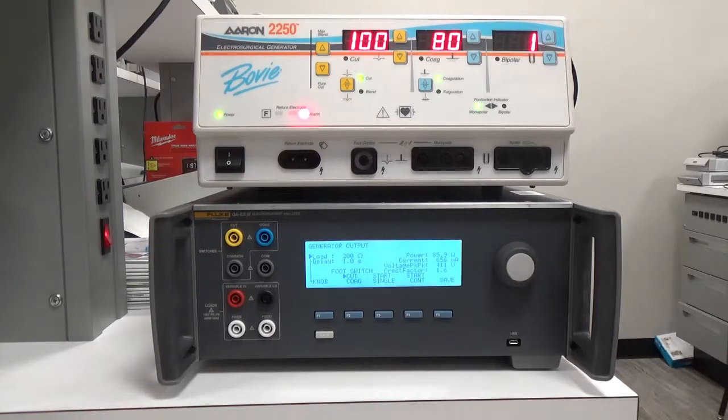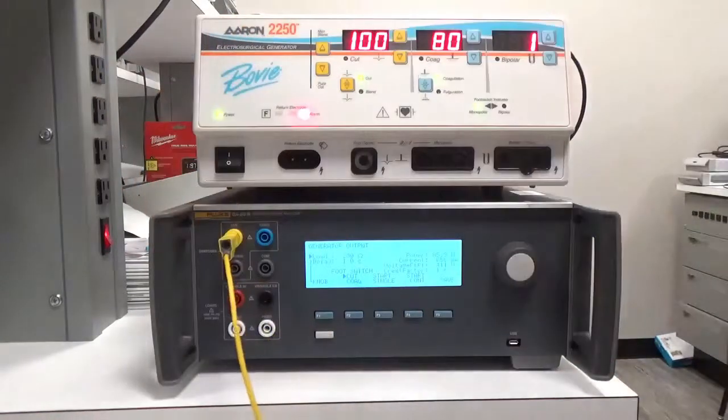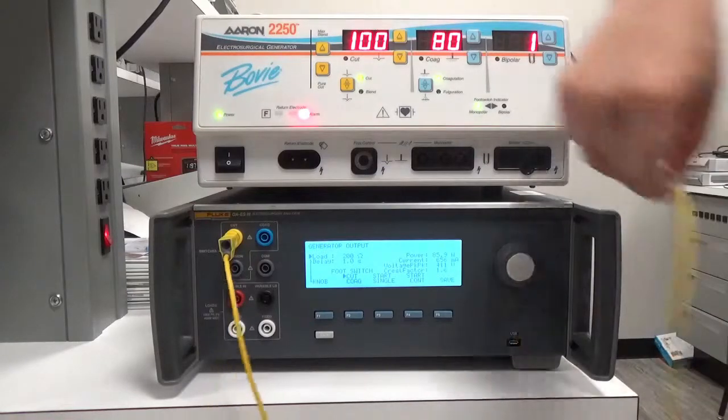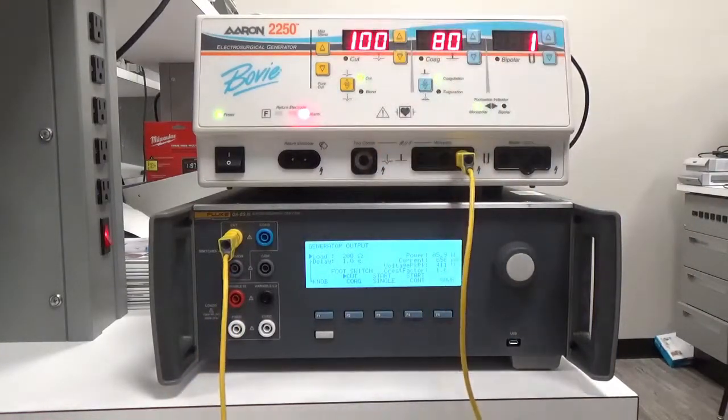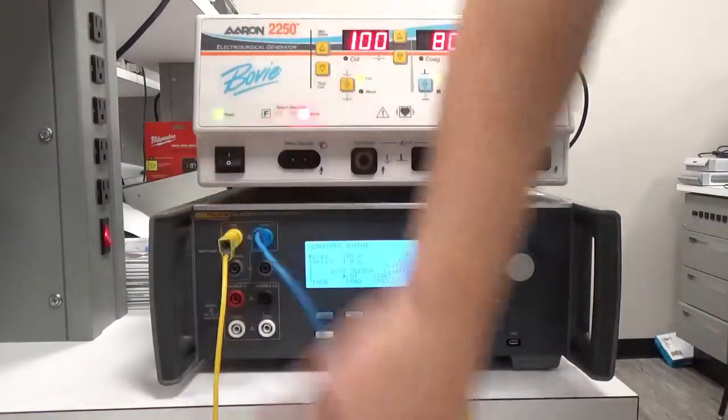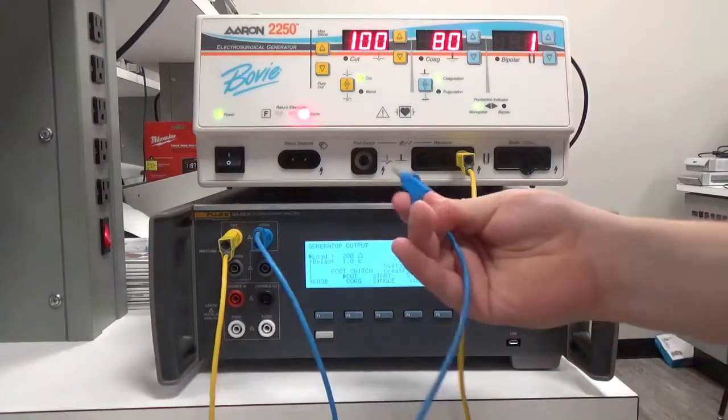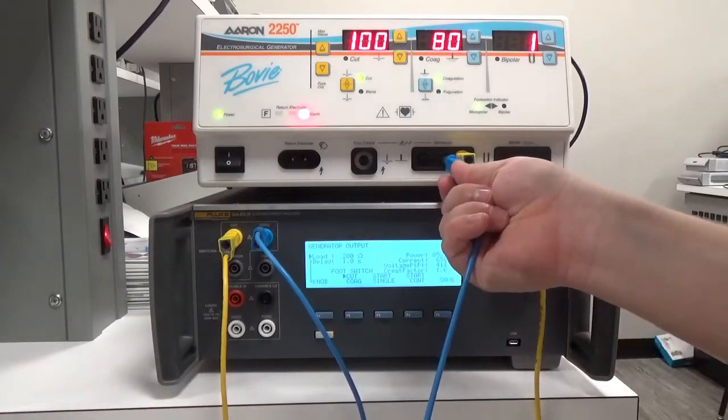In order to start connecting, I'm going to use some cords that are color-coordinated here. I'm going to use yellow as cut, and I'm going to connect that to the monopolar port designated for cut. I'll use blue for coag, and again I will plug that into the port designated for coag on the monopolar side.